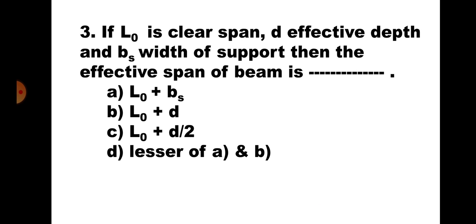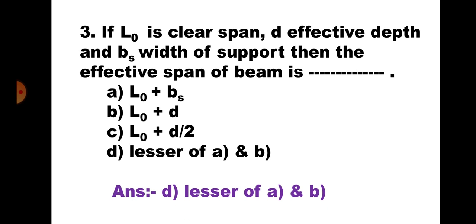Question number three: If L₀ is clear span, d is effective depth, and bs is width of support, the effective span of the beam is — (a) L₀ + bs, (b) L₀ + d, (c) L₀ + d/2, (d) lesser of (a) and (b). We have two criteria: clear span plus width of support, and clear span plus effective depth — whichever is less is the effective span. The correct answer is (d) lesser of (a) and (b).